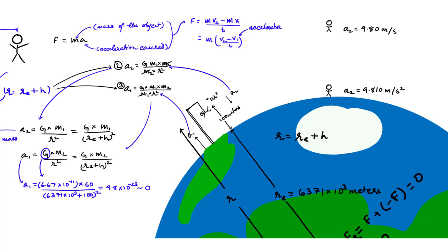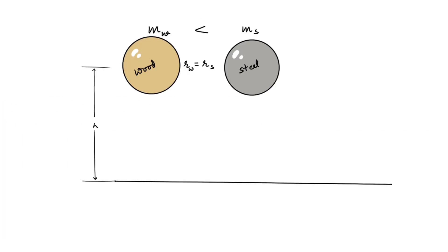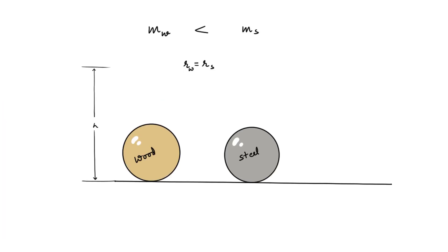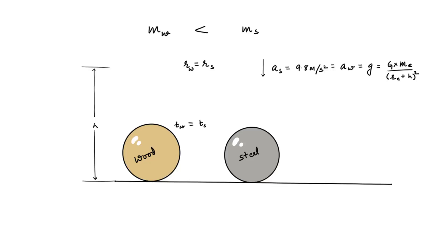Don't believe me? Try it for different heights starting from zero meters all the way to 500 meters and beyond. So what you've learned from this part is: if you drop any two objects from a height, they will reach the ground at the same time, because their acceleration is independent of their masses — it depends only on the gravitational constant, the mass of Earth, and the center-to-center distance between the objects and Earth.